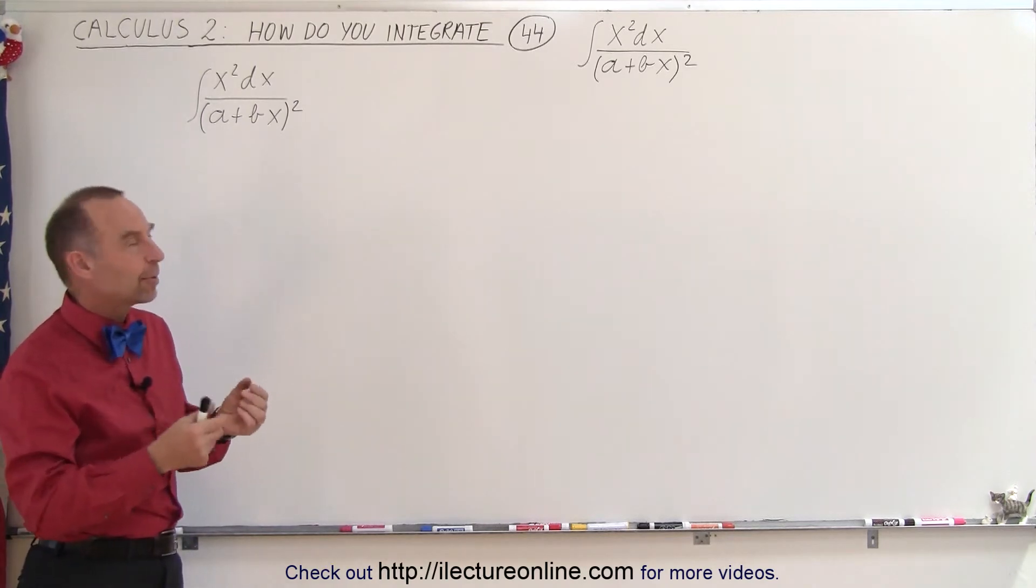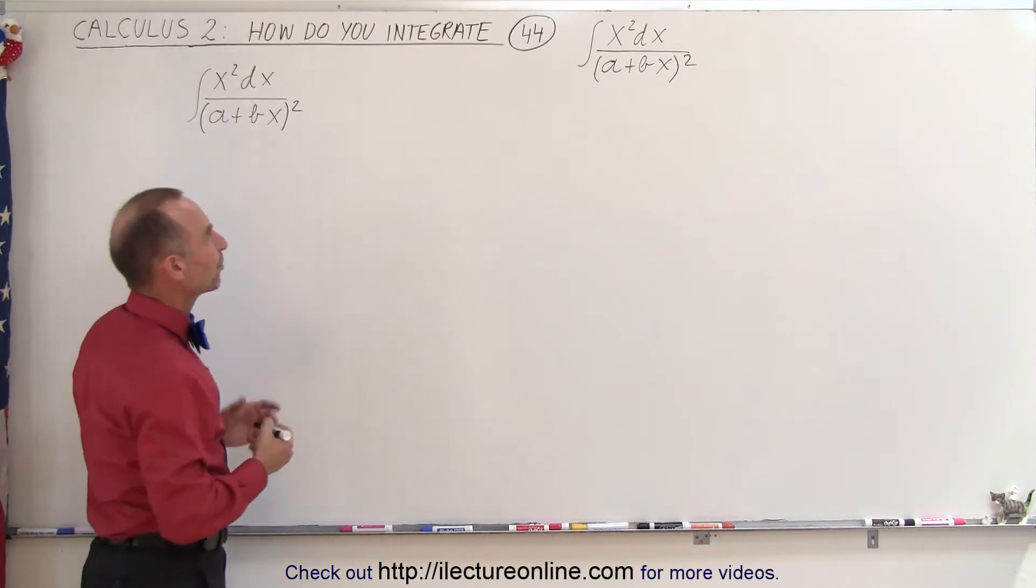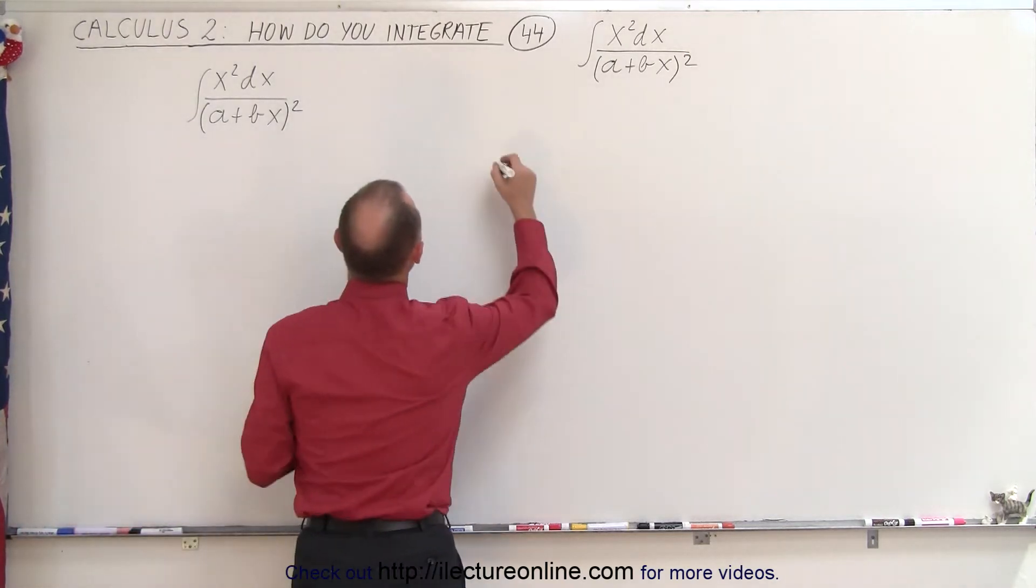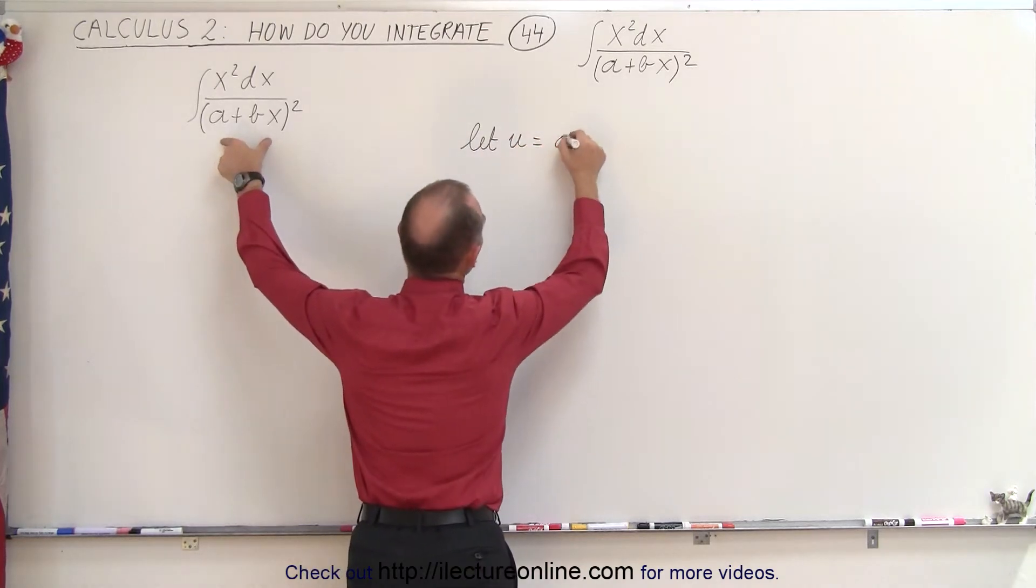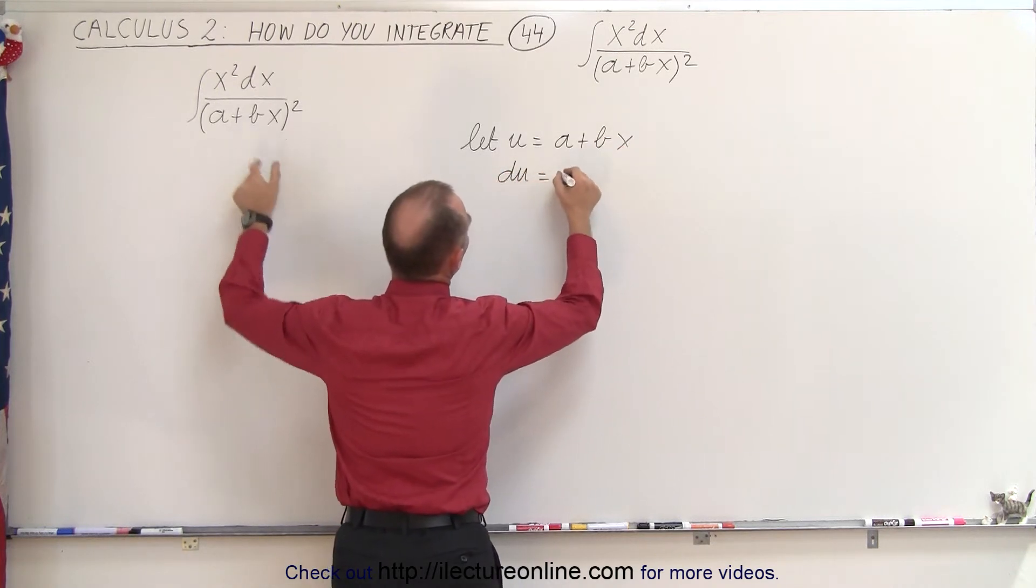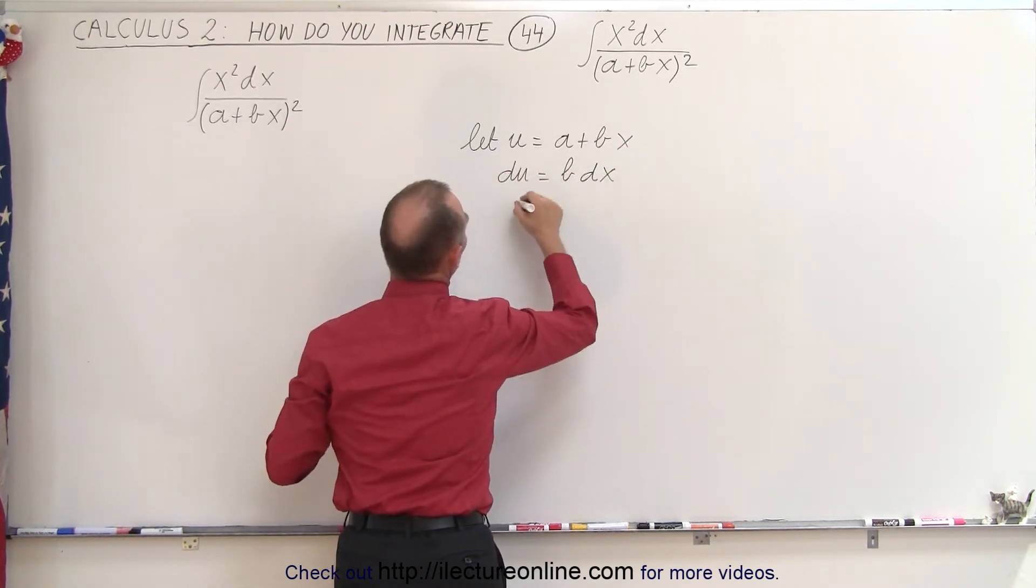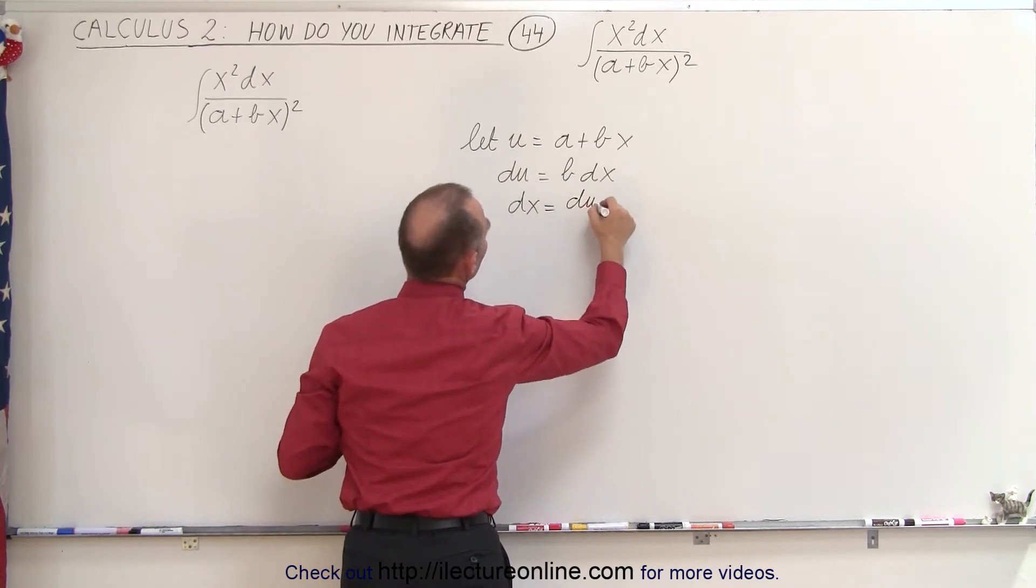Each time when the difference appears, don't let that scare you. The methodology should be the same. So again, what we're going to do here is we're going to let u equal what's inside the parentheses, a plus bx, and so du is equal to b dx, or dx is equal to du divided by b.